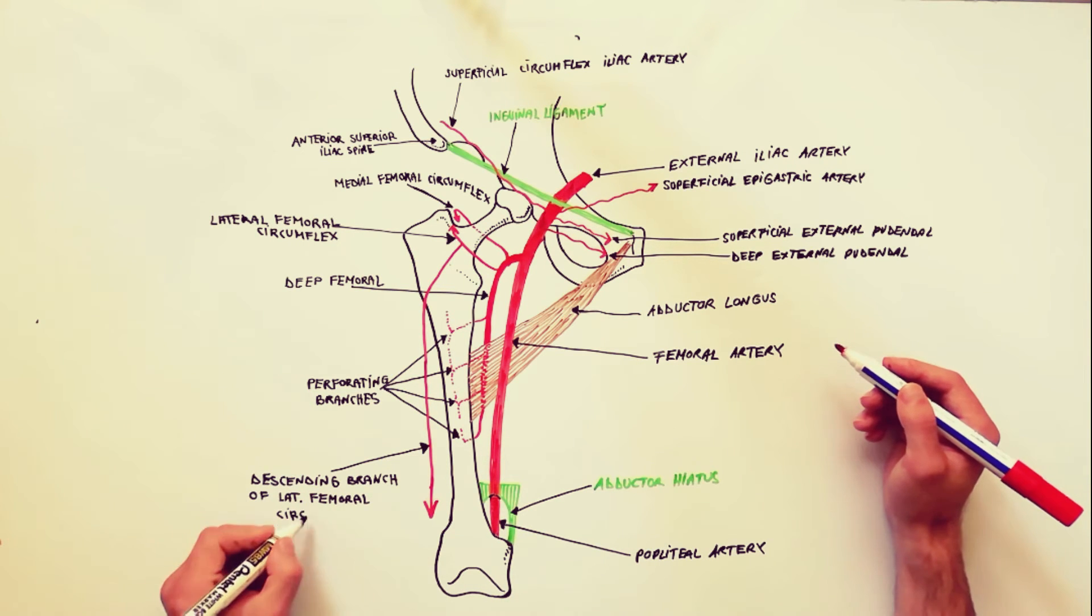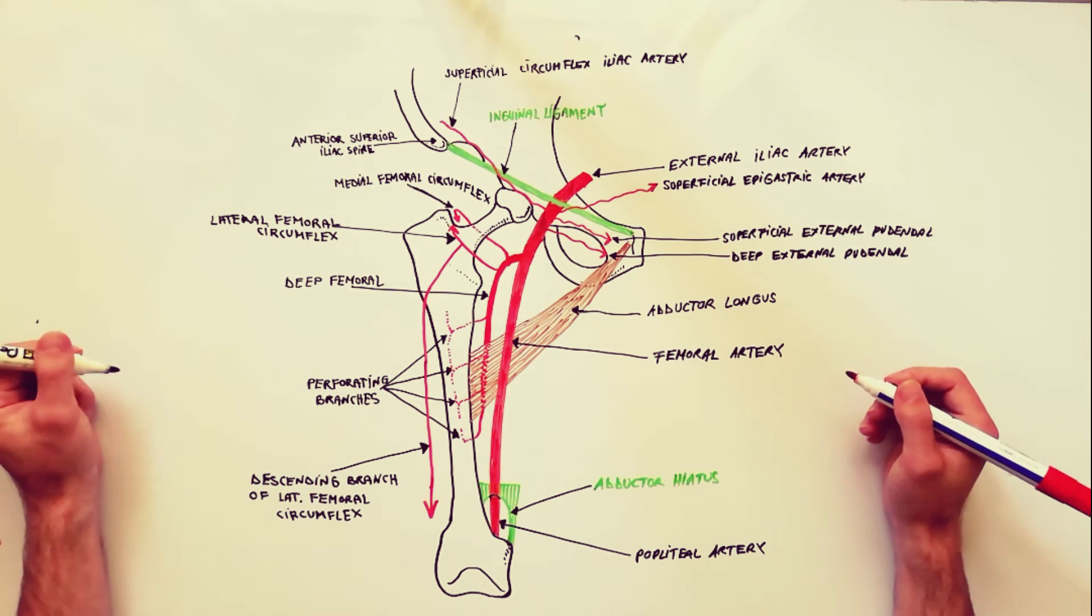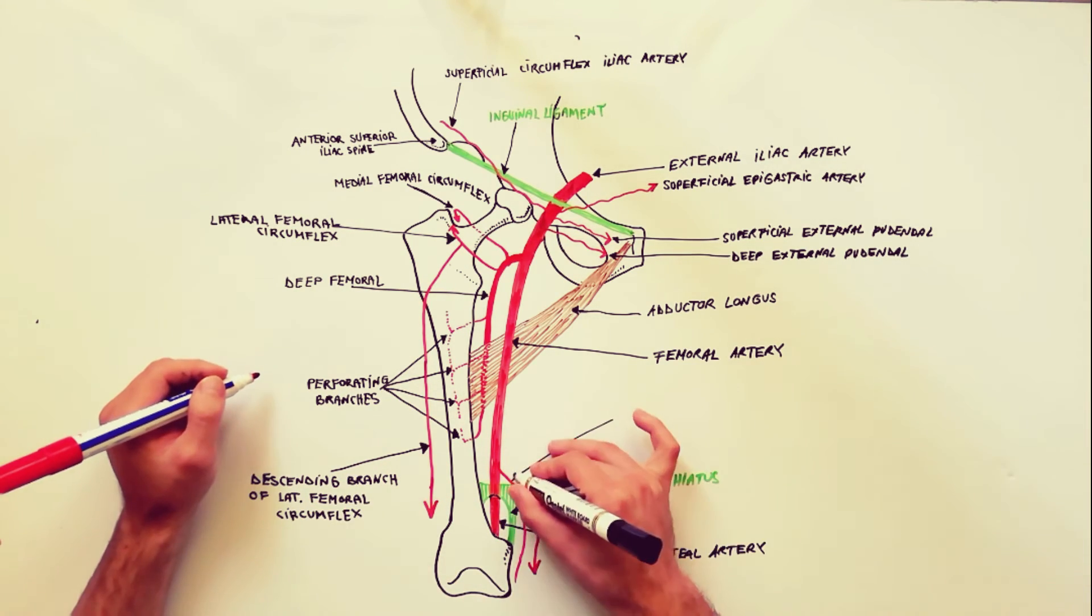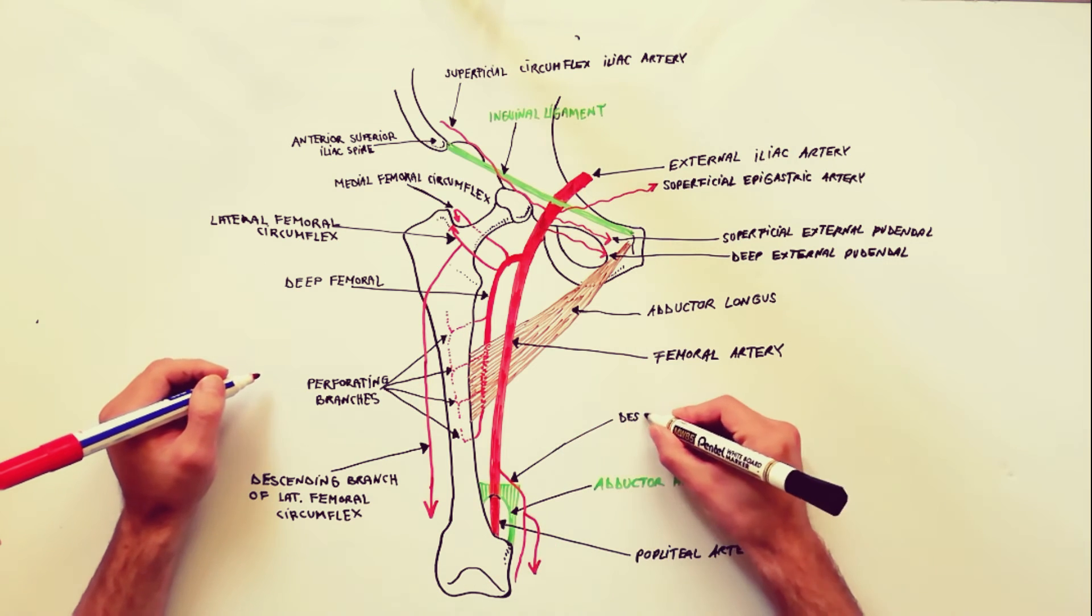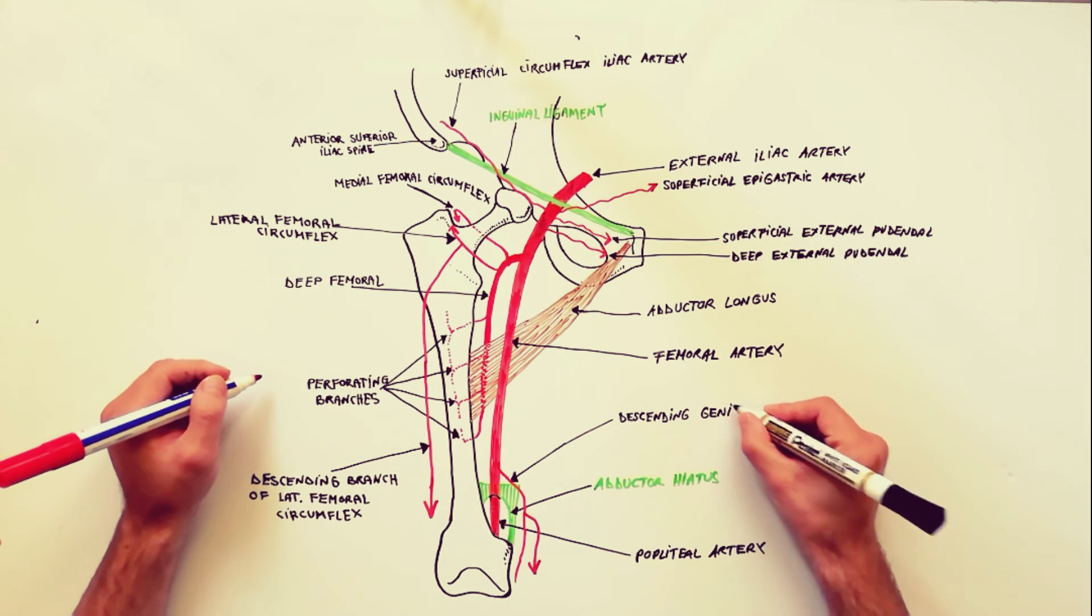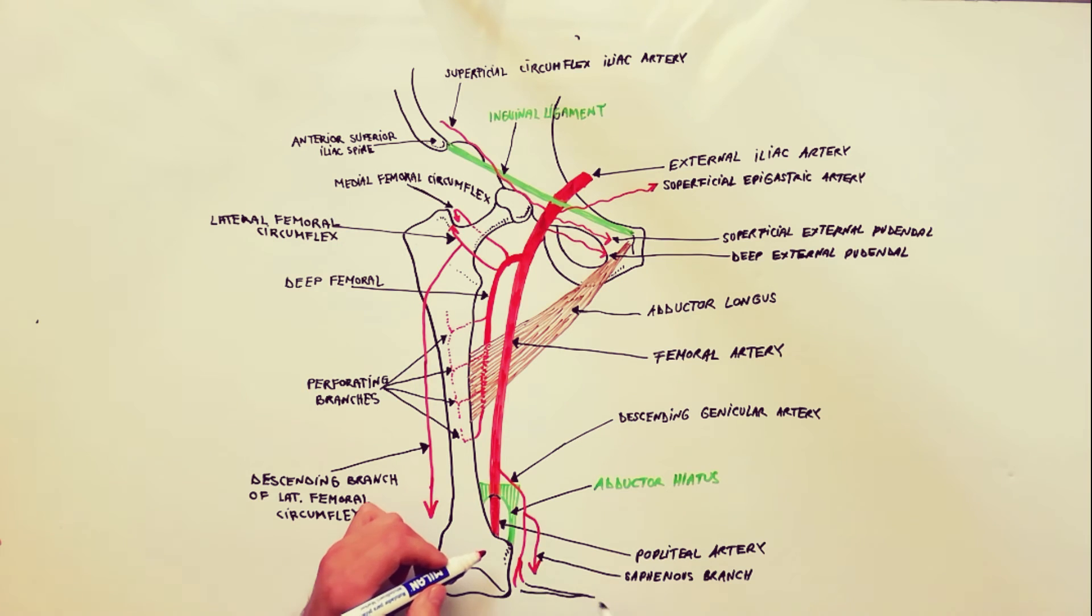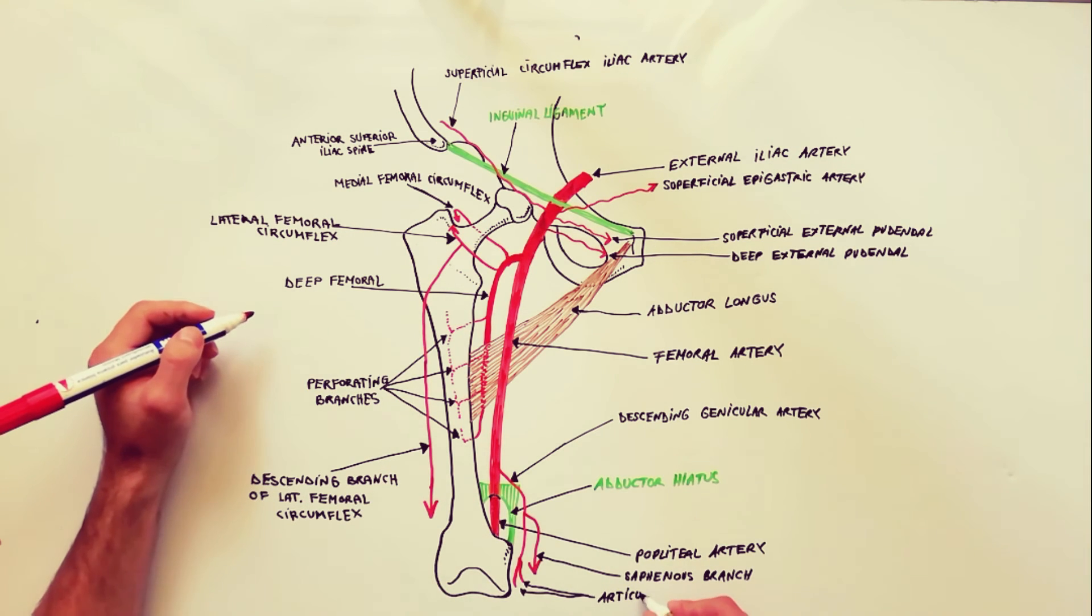The last branch of the femoral artery to be indicated is the descending genicular artery, which is a small branch that arises from the femoral artery near its termination. This artery immediately terminates into a saphenous branch and some articular branches, which assist in supplying the knee joint.